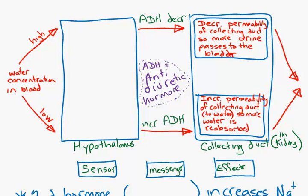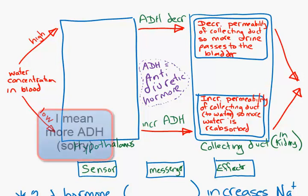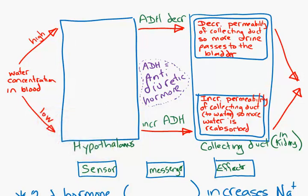So, if you've got too much water, less ADH, your collecting duct becomes more waterproof. It means the water goes straight through to your bladder. On the other hand, if you don't have enough water, message gets sent, which is less ADH. It makes your collecting duct more permeable to water, so more can be reabsorbed back into your body.